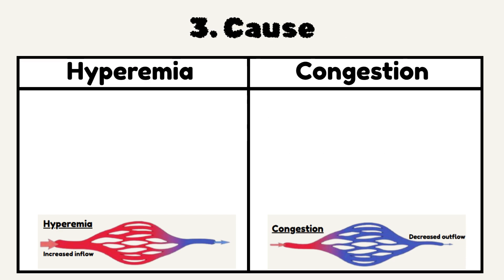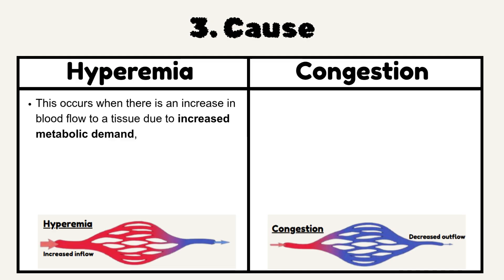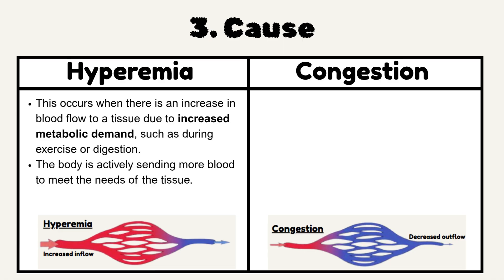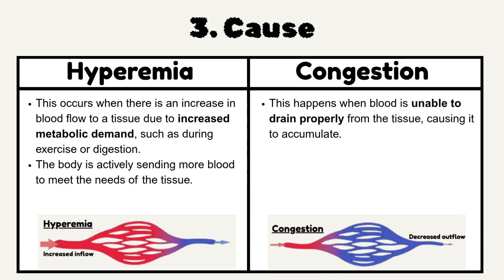Number 3: Cause. Hyperemia occurs when there is an increase in blood flow to a tissue due to increased metabolic demand, such as during exercise or digestion. The body is actively sending more blood to meet the needs of the tissue. Congestion happens when blood is unable to drain properly from the tissue, causing it to accumulate — often a result of venous obstruction or heart failure.